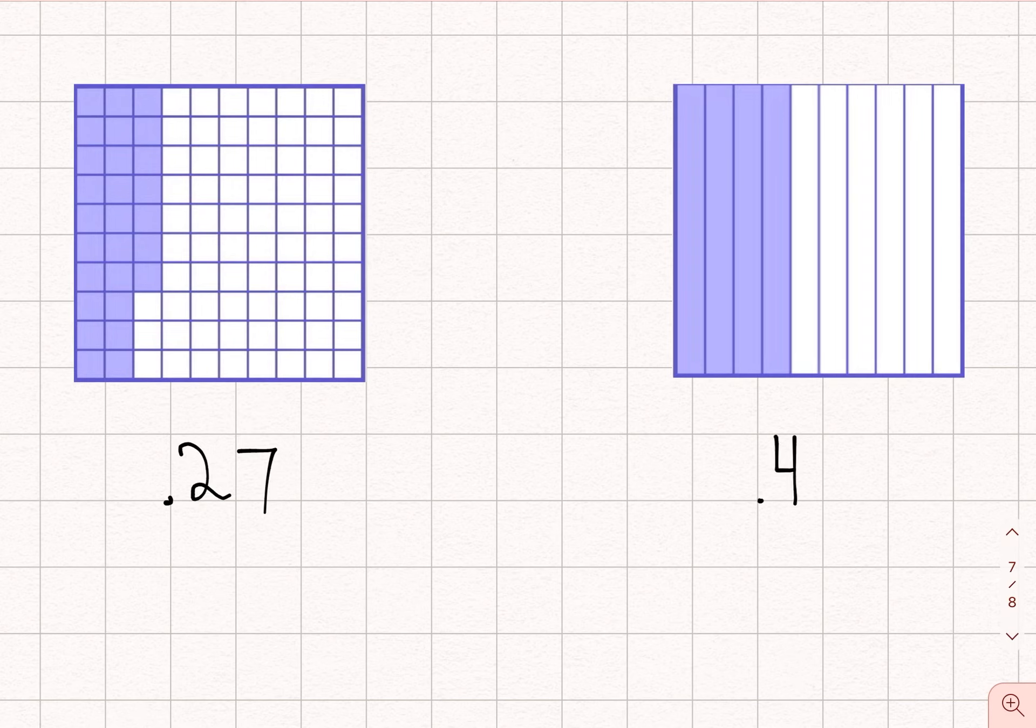So which of these two is greater? Well, when we have decimal numbers that are divided up into different fractions, this is hundredths, this is tenths, it's actually pretty simple. Take a look at the first place value. Over here, it's two tenths. And over here, it's four tenths. If one of these is greater, right away you know which decimal fraction is a greater number.